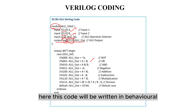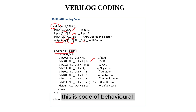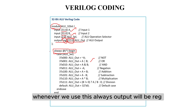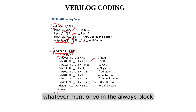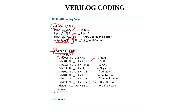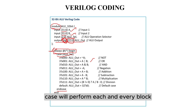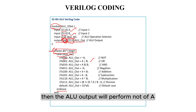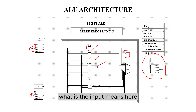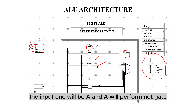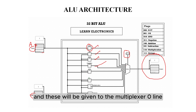In Verilog there are three coding styles: behavioral, gate level, and structural. This code is written in behavioral style. How to identify behavioral coding? There will be a block known as ALWAYS. This is the behavioral code — whenever we use ALWAYS, the output will be written here. Inside the ALWAYS block we use a case statement, which is similar to the switch-case in C. If we give 0, 0, 0 as the multiplexer selection line input, the ALU output will perform NOT of A. Input 1 is A, so A will perform NOT A, and this will be given to multiplexer line 0. Whenever we input selection line as 0, 0, 0 we get the NOT gate output.